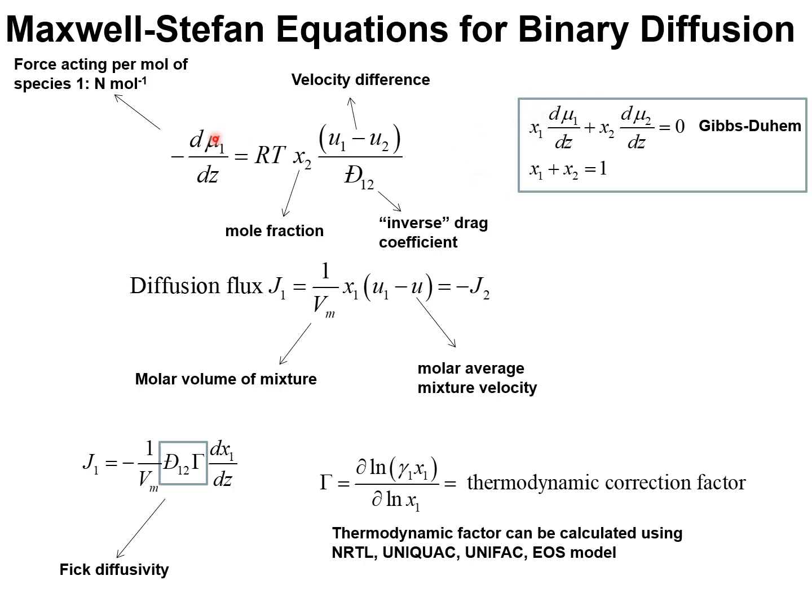Let's begin by analyzing diffusion in binary mixtures of components 1 and 2. Let U1 and U2 represent the velocities of motion of components 1 and 2 in a laboratory fixed reference frame. U is the molar average mixture velocity.